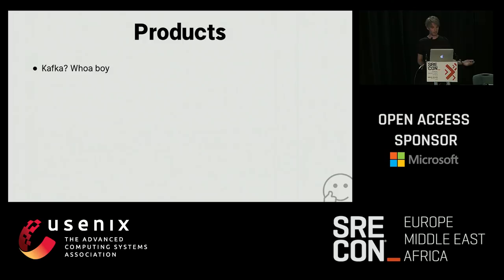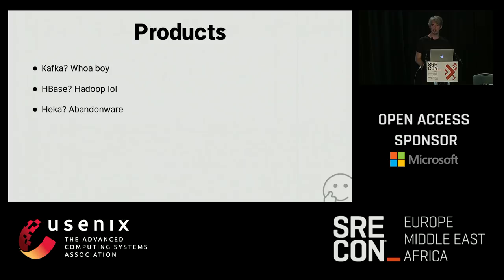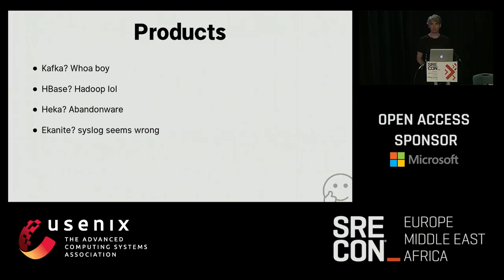Surveying the landscape of products: some people use Kafka for logging, but that seems like overkill for typical application logging. Some swear by HBase, but I'm never going to manage a Hadoop cluster if I can avoid it. Heka was cool for a while but seems to be abandonedware. There's Econite, a modern syslog thing, but it's written in C and the syslog protocol seems wrong for this. Fluentd and Logstash only solve part of the problem — transport and ingestion — but not storage and querying. Hosted products are great but they're not on-prem and they cost money.